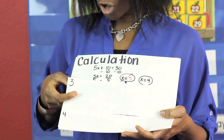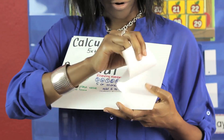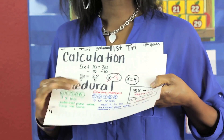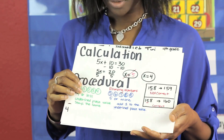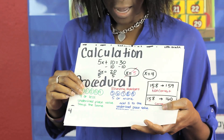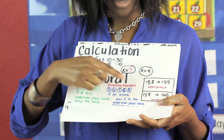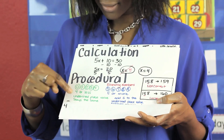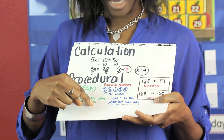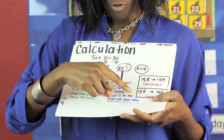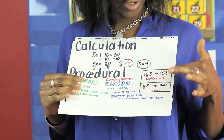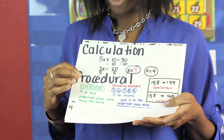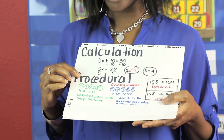The third common math error is procedural errors. Here I have rounding numbers. The steps tell you four or less stays the same, five or more add one. Here you can see that the student got the procedure incorrectly.